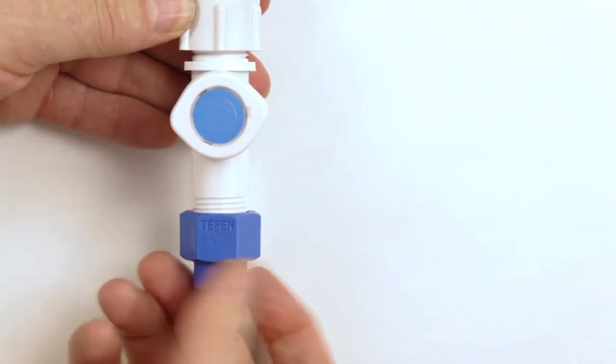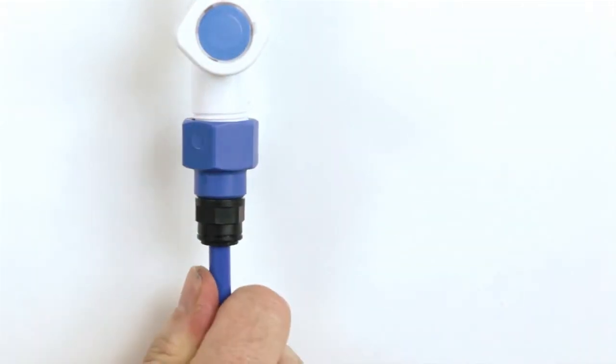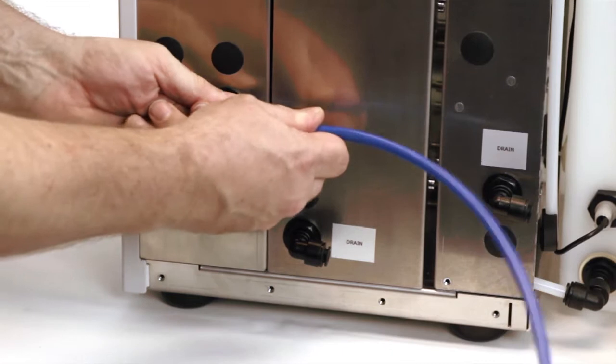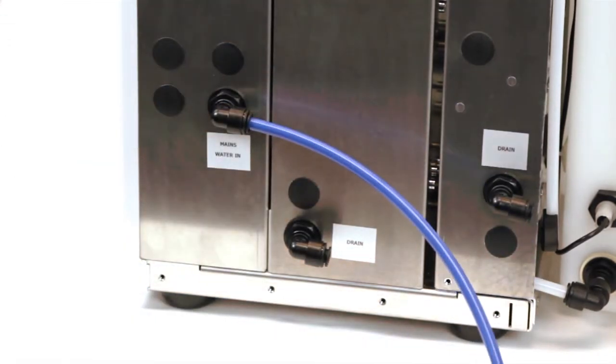Connect to the inlet using the 8mm tube provided. If fed from a purified water distribution system, a pressure regulator is provided to reduce the pressure down to one bar.